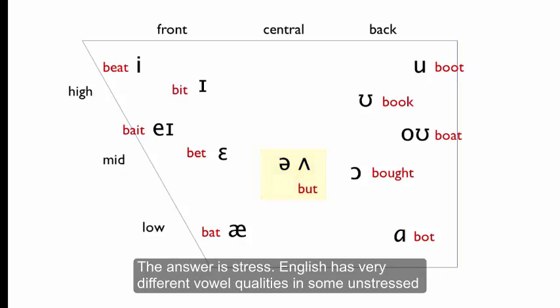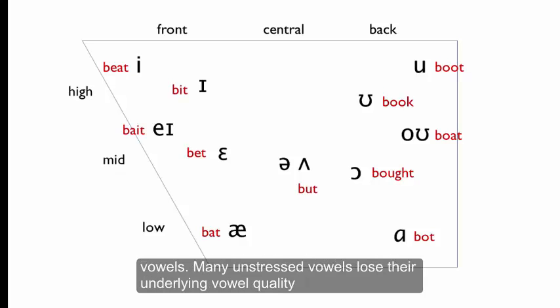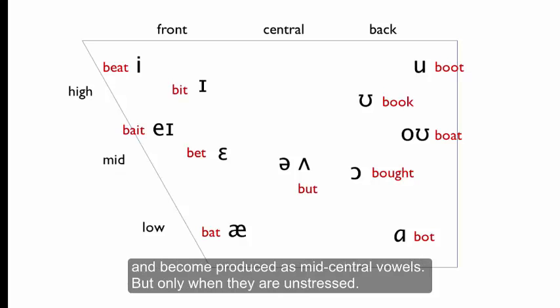The answer is stress. English has a very different vowel quality in some unstressed vowels. Many unstressed vowels lose their underlying vowel quality and become produced as mid-central vowels.